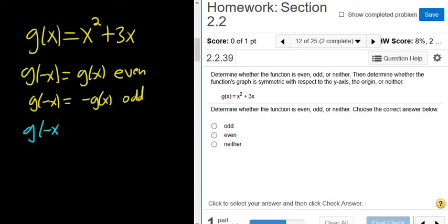So in this case, when we plug in negative x, we get negative x squared plus 3 times negative x.